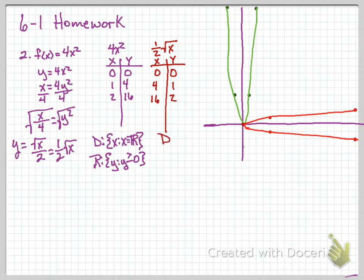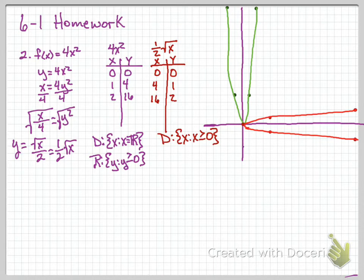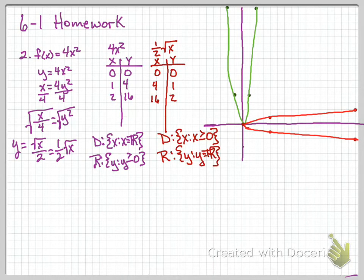For our second graph, the inverse, the domain is x such that x is greater than or equal to 0, because it starts at the origin and goes out to the right. As the graph goes out to the right it gets wider and hits all points up and down. So our range is y such that y equals all real numbers.